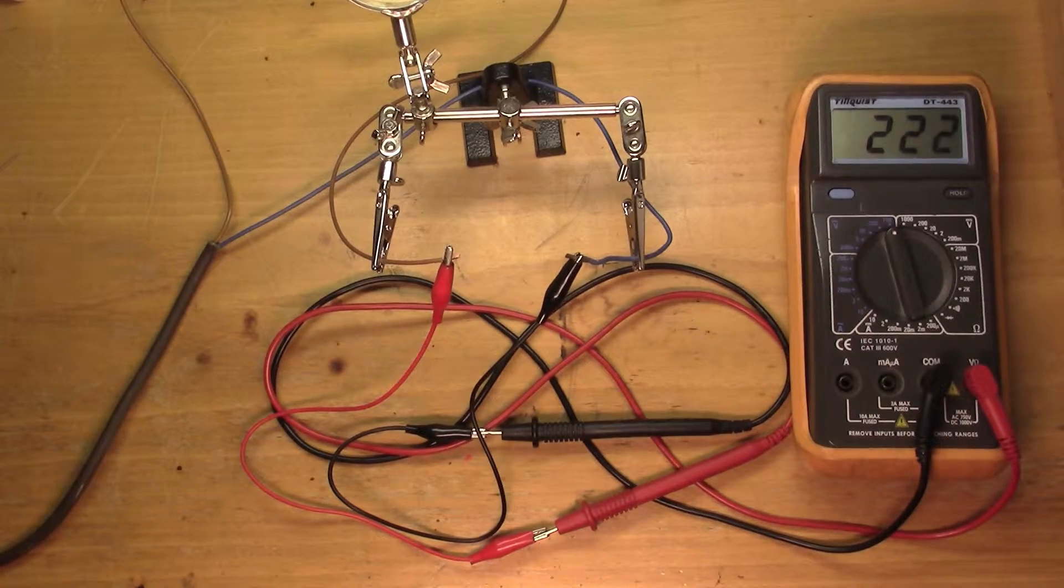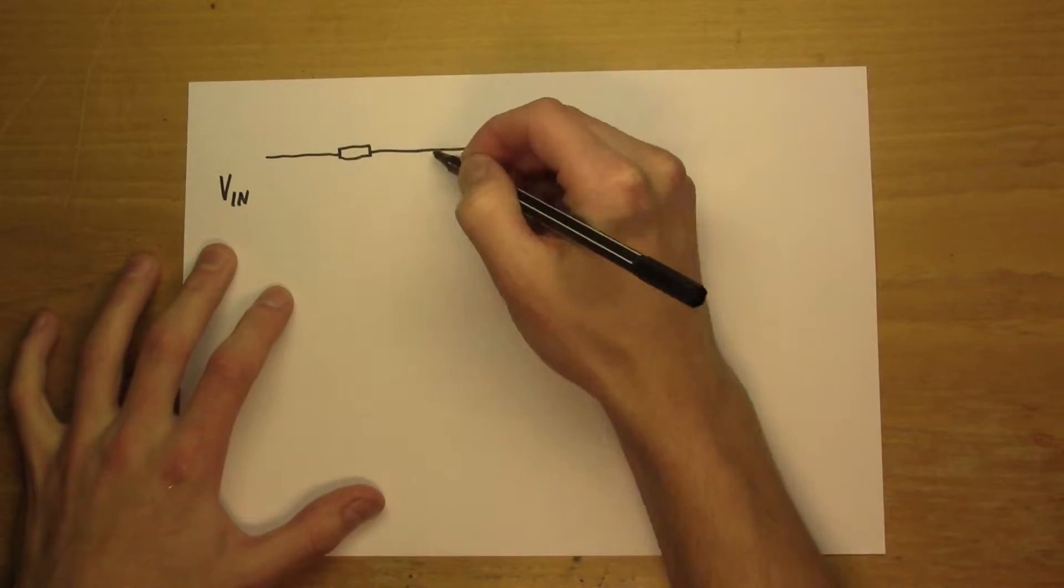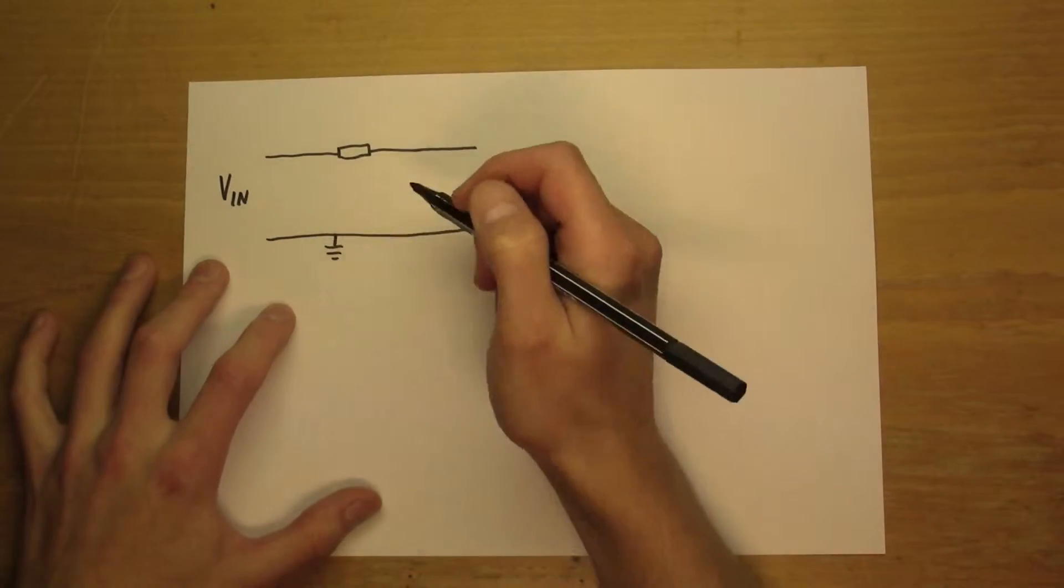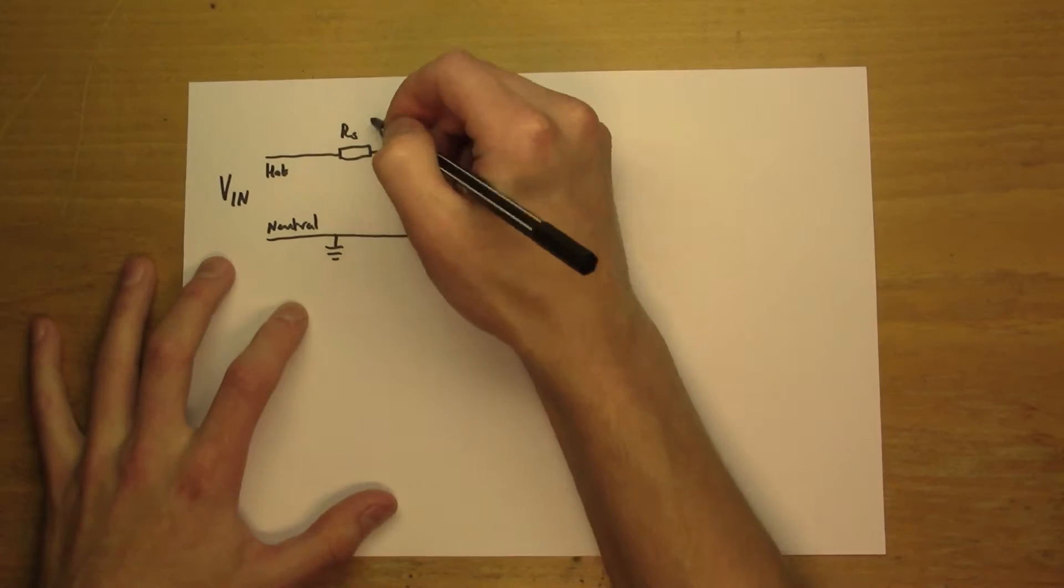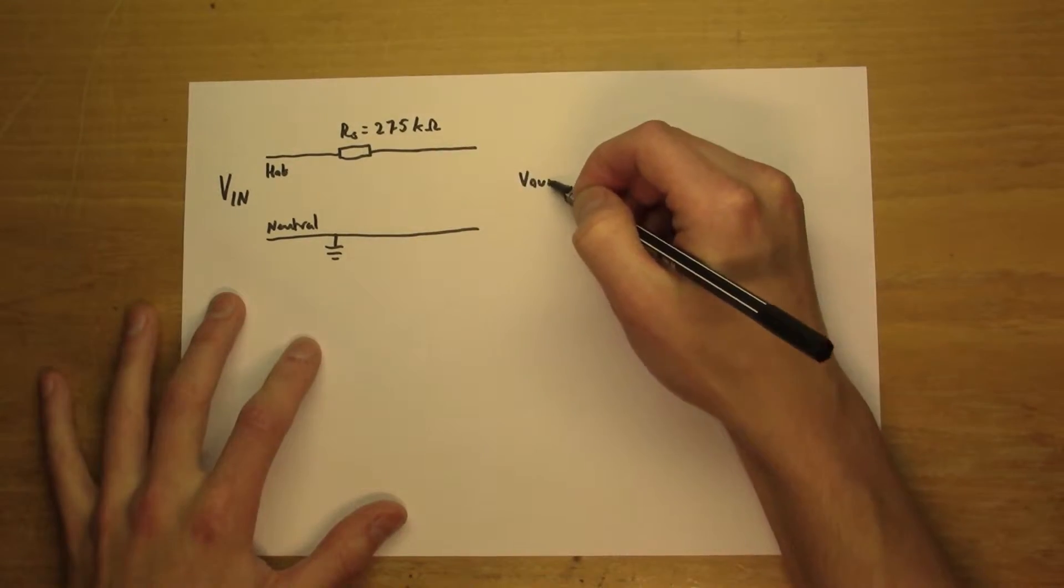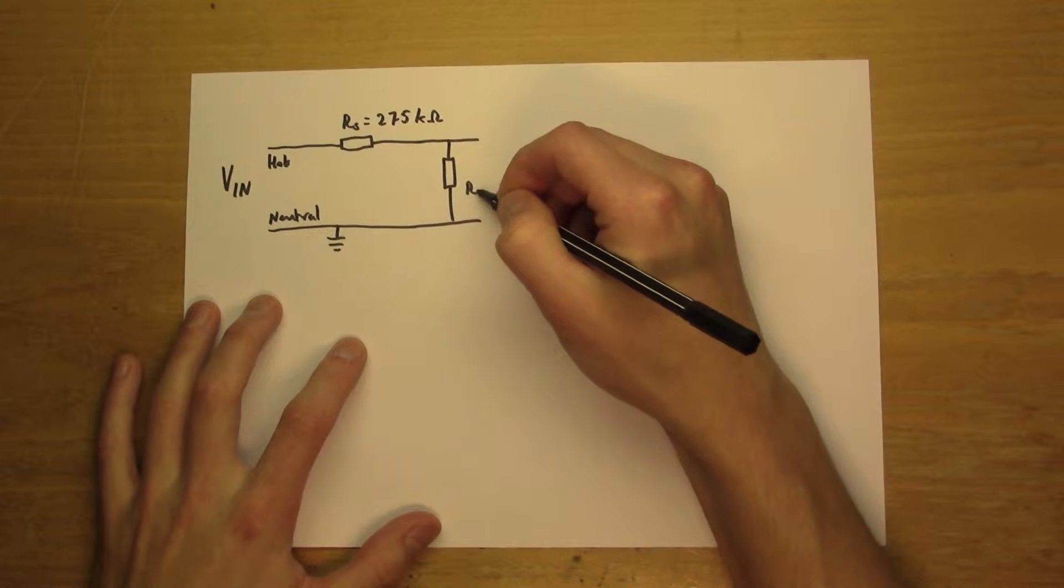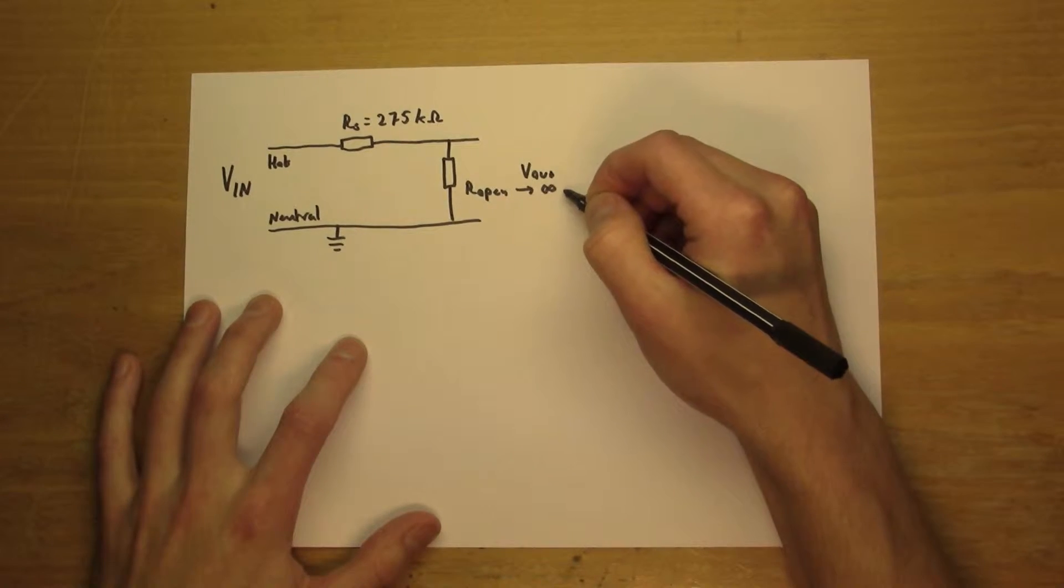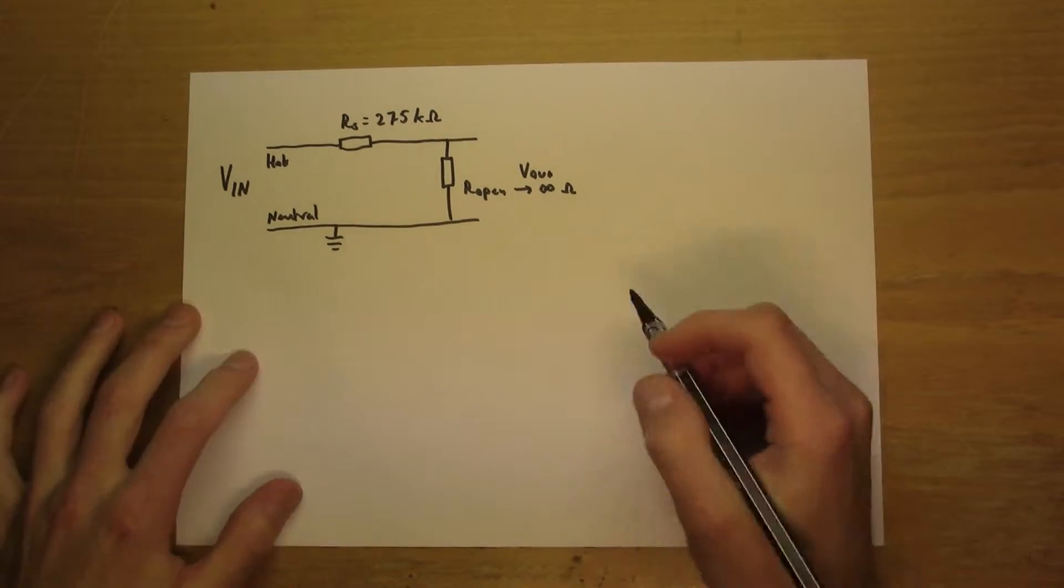So, why does the multimeter show 220 volts? Let's look at the circuit. This is what the circuit looks like before touching the wires. A resistor with the equivalent resistance of 275 kilo ohms, in series with the open circuit. But it can also be seen as a closed circuit with a resistor with close to infinity resistance.